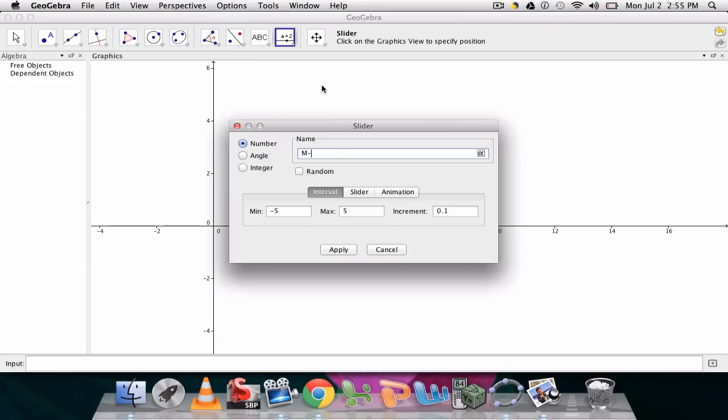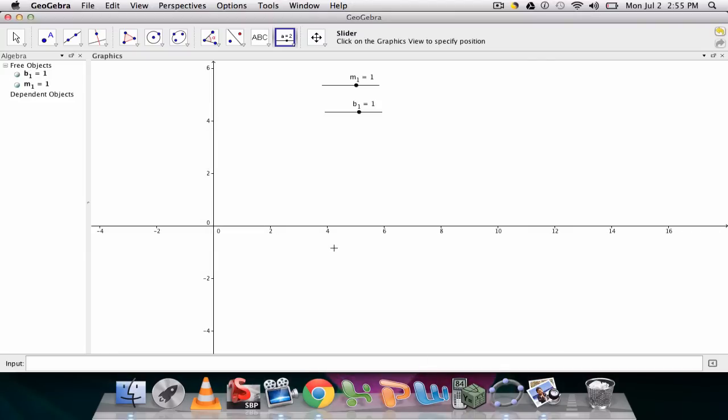Now this will be m sub 1, so underscore, m underscore 1, that's my slope of my first line. And then below it let me set up b underscore 1 for the y-intercept of my first line.